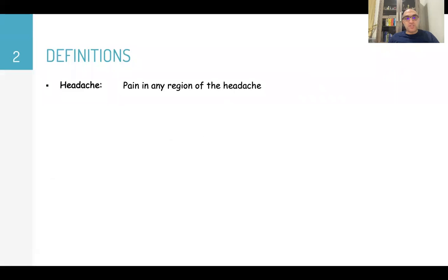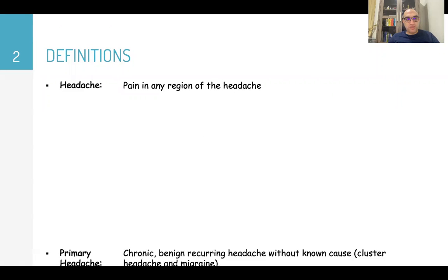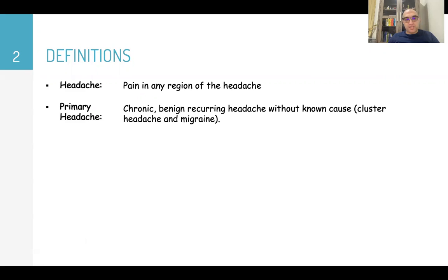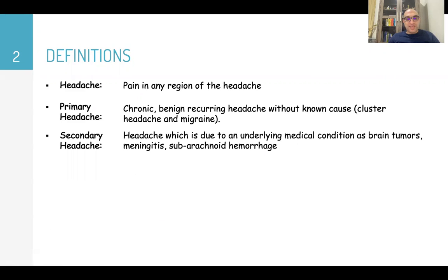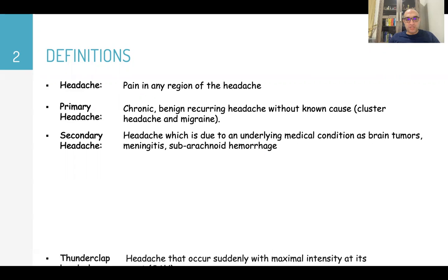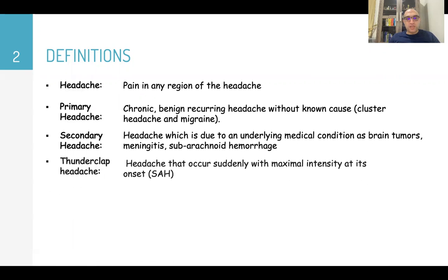Definitions first: headache is pain in any region of the head. It is classified as primary or secondary. Primary headache is chronic, recurring without a known cause, like cluster headache or migraine. Secondary headache is headache due to an underlying medical condition, like brain tumor, meningitis, subarachnoid hemorrhage, or subdural hemorrhage.